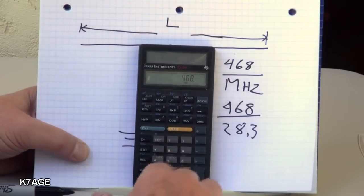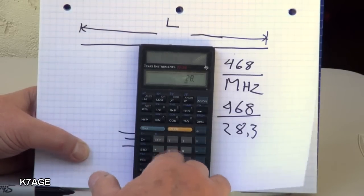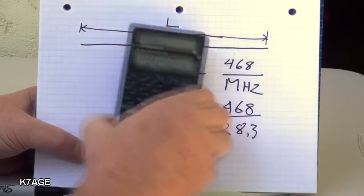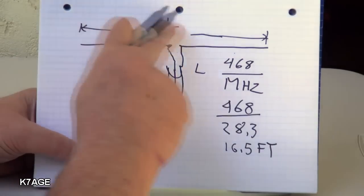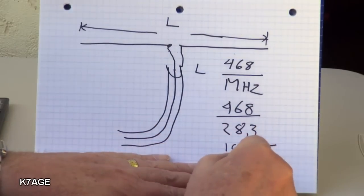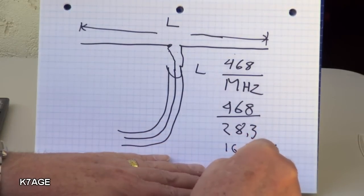468 divided by 28.3 equals 16.5 feet. Each side is half of that. So that'll be eight and a quarter feet or eight feet three inches.